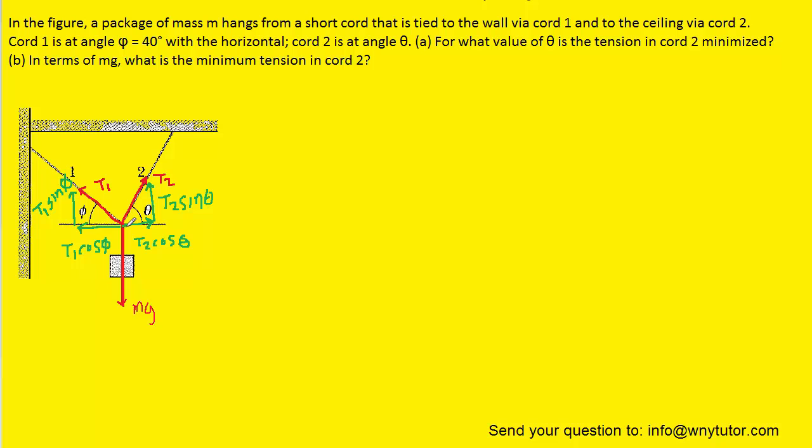Because this junction of ropes is in equilibrium, we know that the sum of the forces in the y direction is going to equal zero. And we also know that the sum of the forces in the x direction is zero. And then even the sum of the torques is going to equal zero.